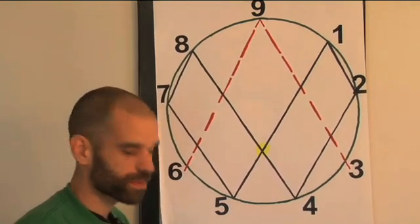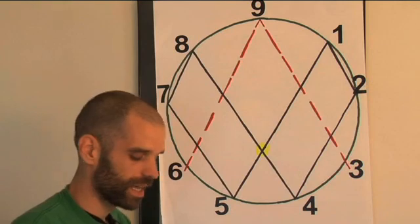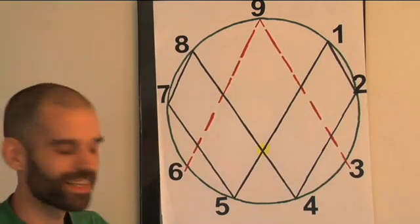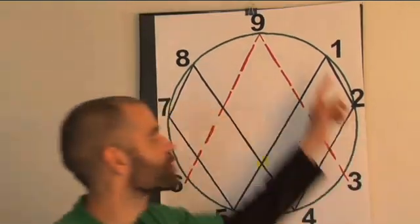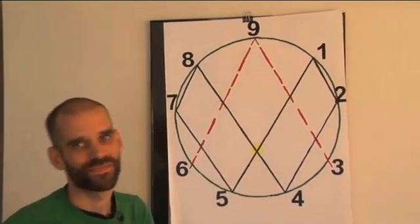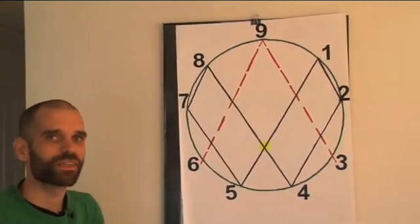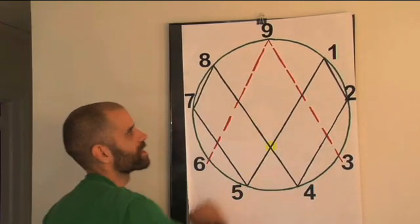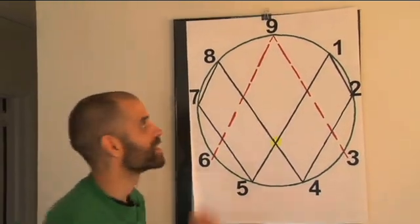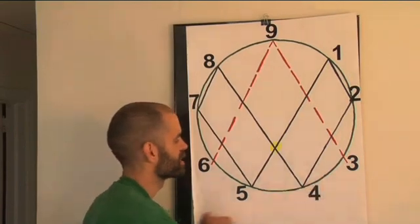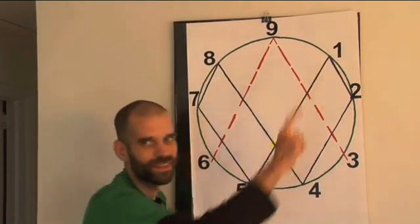9 divided by 7 comes back to 9, 9 divided by 8 comes back to 9, and 9 divided by 9 — here's the magic trick — gives you 1. So the only numbers that seem to have this ability to cross between one world and the other are: 9, 3, 6, and 1.